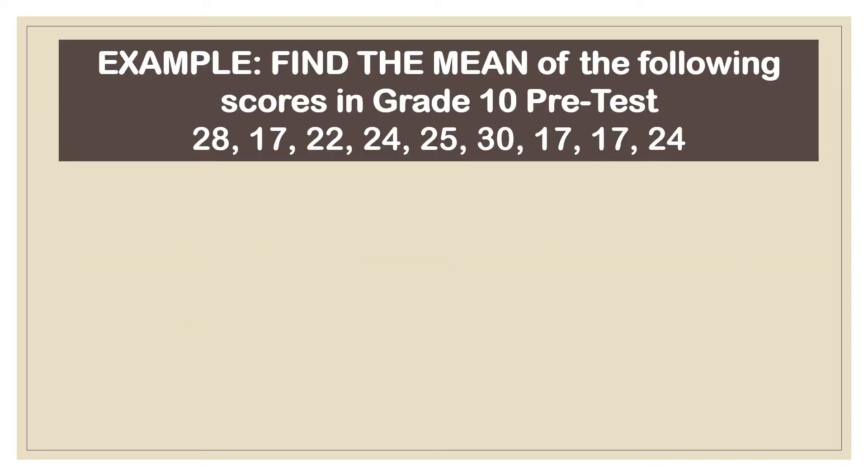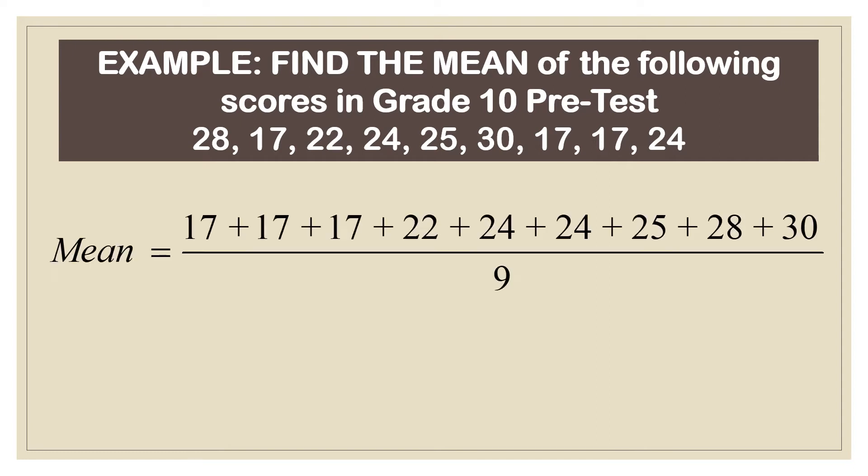Example, find the mean of the following scores in grade 10 pre-test. The scores are 28, 17, 22, 24, 25, 30, 17, 17, 24. Now, how do we get the mean? You add all the numbers and then divide it by 9. So, how did you get 9? If you count from 28 up to 24, there are 9 numbers. So, you add what's in the numerator and then divide by 9. So, the average or the mean is 22.67.